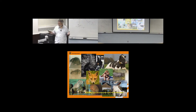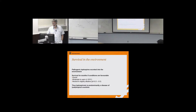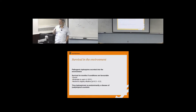Leptospires live in a variety of mammalian species, and they are excreted with urine into the environment where they have to survive for some time. They survive longer if conditions are favorable — humid, moderate to warm, neutral, slightly alkaline environment — which implies that leptospirosis is dominant in tropical and subtropical countries.